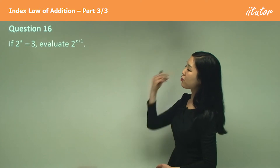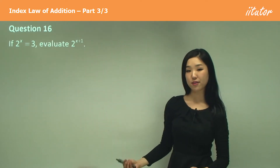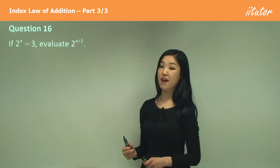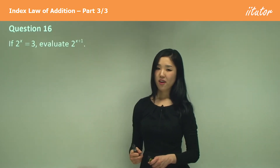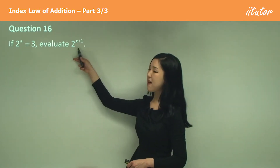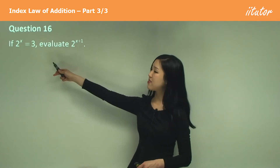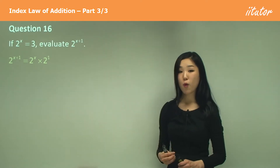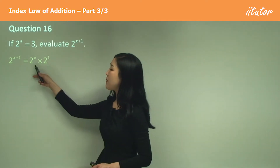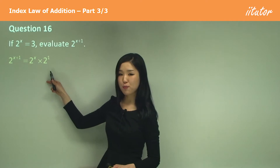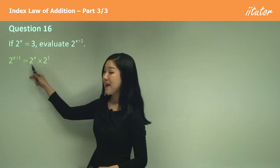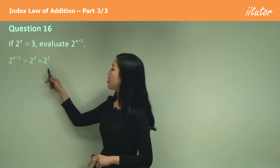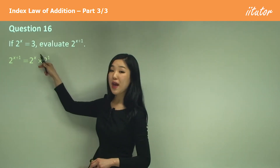They say 2 to the power of x is 3 — that's the given property — and we need to evaluate 2 to the power of x plus 1. I know that 2 to the power of x plus 1 is 2 to the power of x times 2 to the power of 1. So as long as the base is the same, I can split up the indices, because when we're multiplying we add the indices.